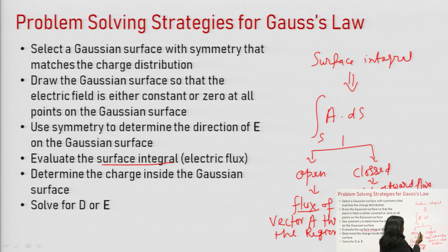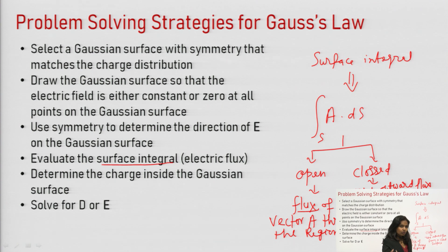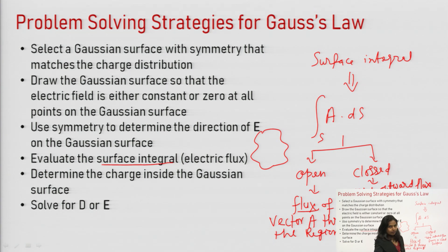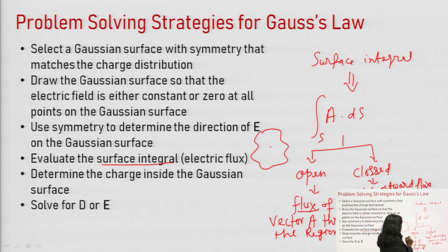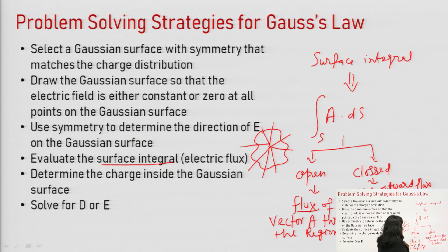In open integration, we are getting total flux through the surface. However, in closed integration, we are getting total outward flux from a closed surface. A closed surface constitutes a volume. If some charge is placed inside, then the total lines of force coming outward and cutting this surface will constitute total flux, which will be equal to Q.